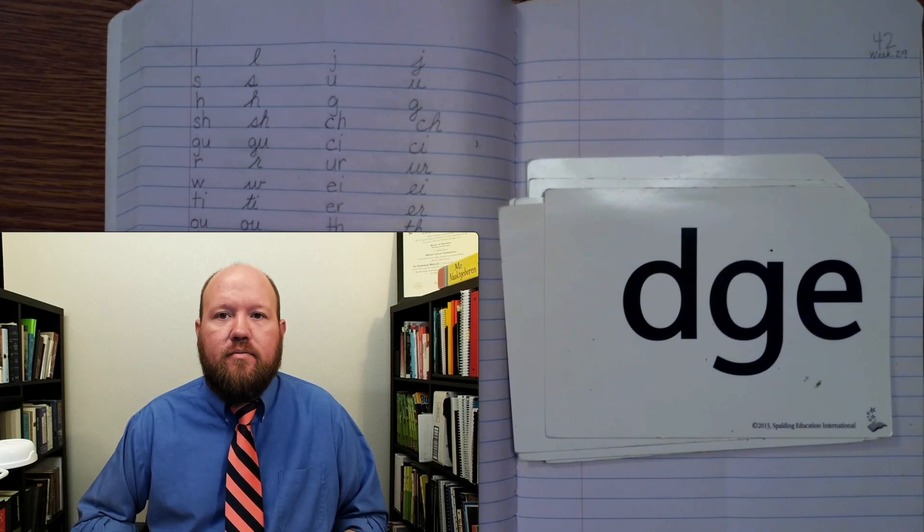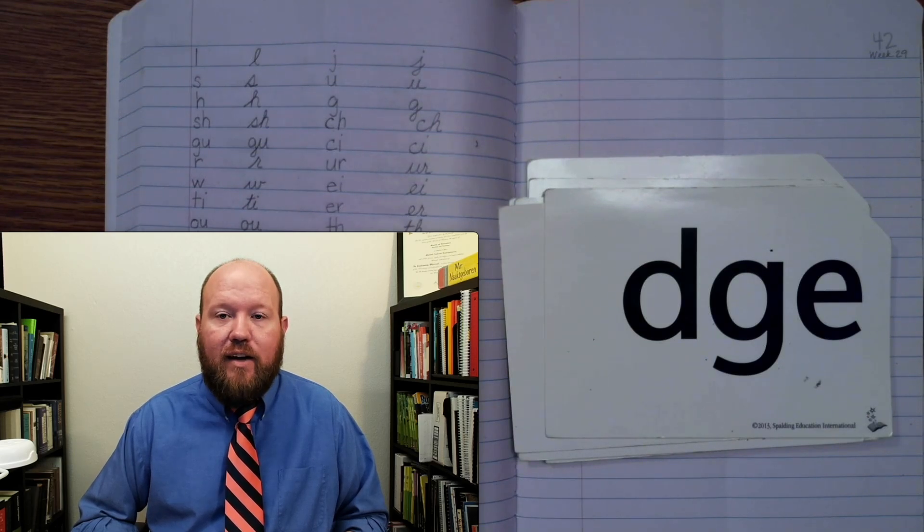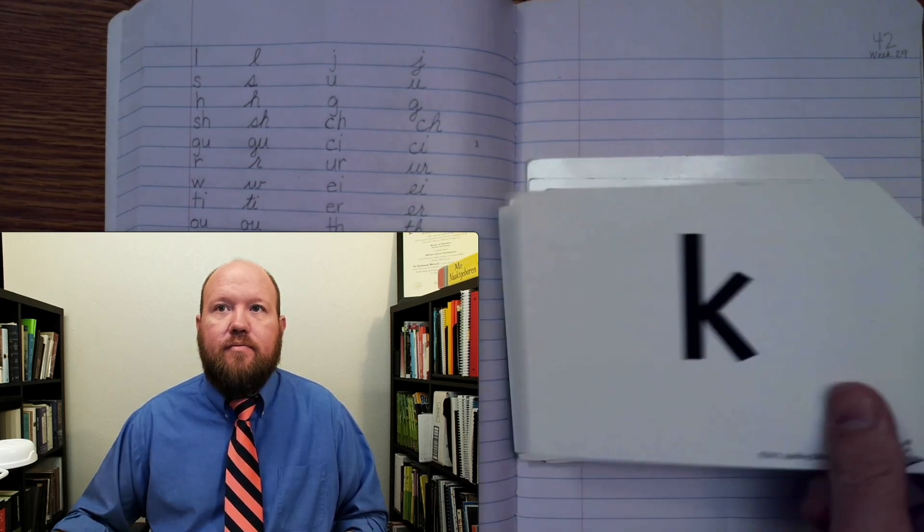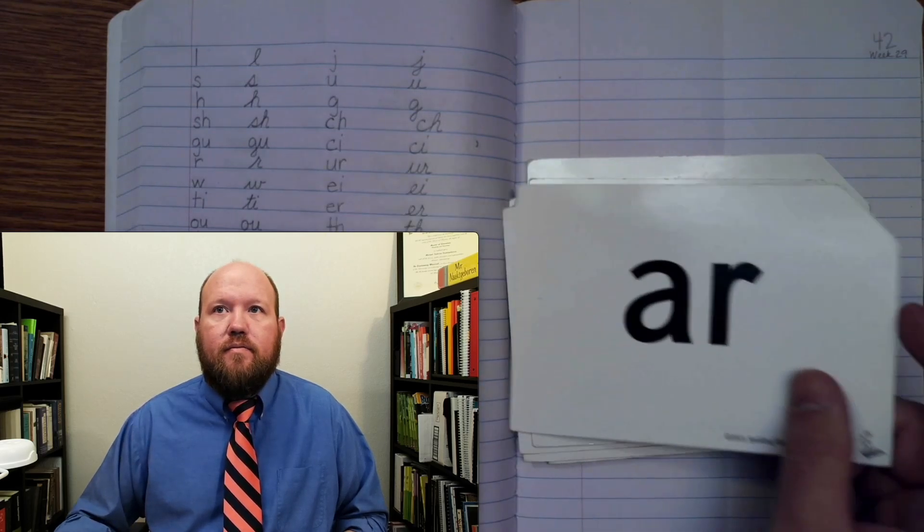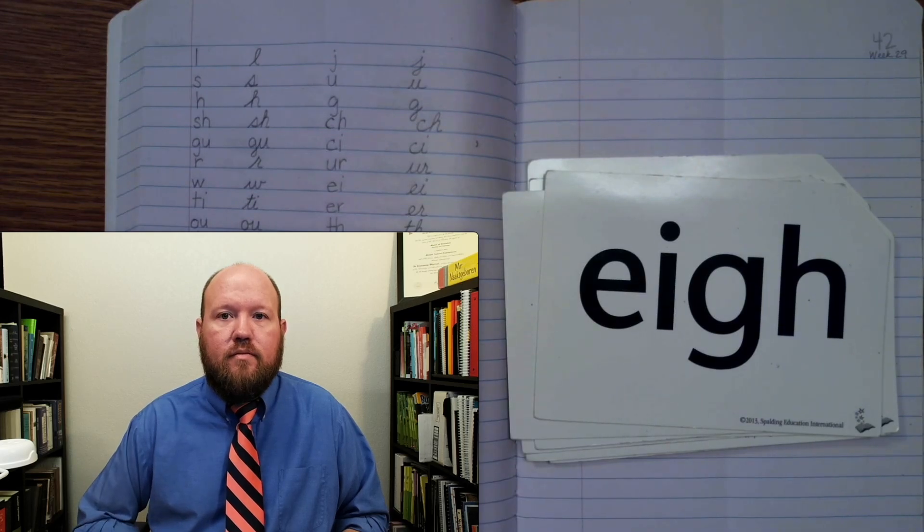When may I use this phonogram? After a single vowel. O. O. If it says its first sound, R, A. Four letters.